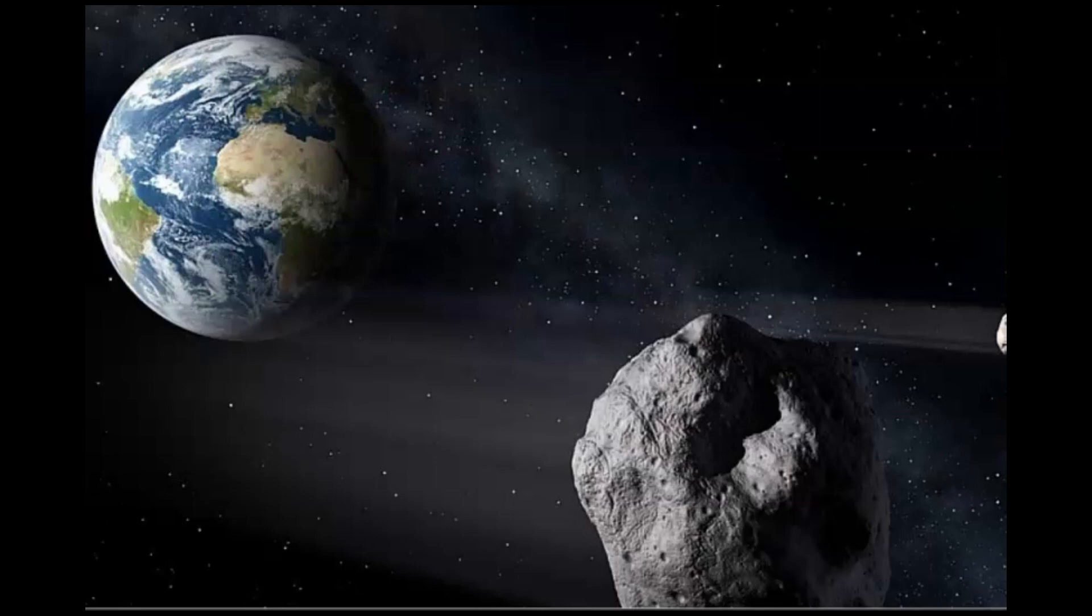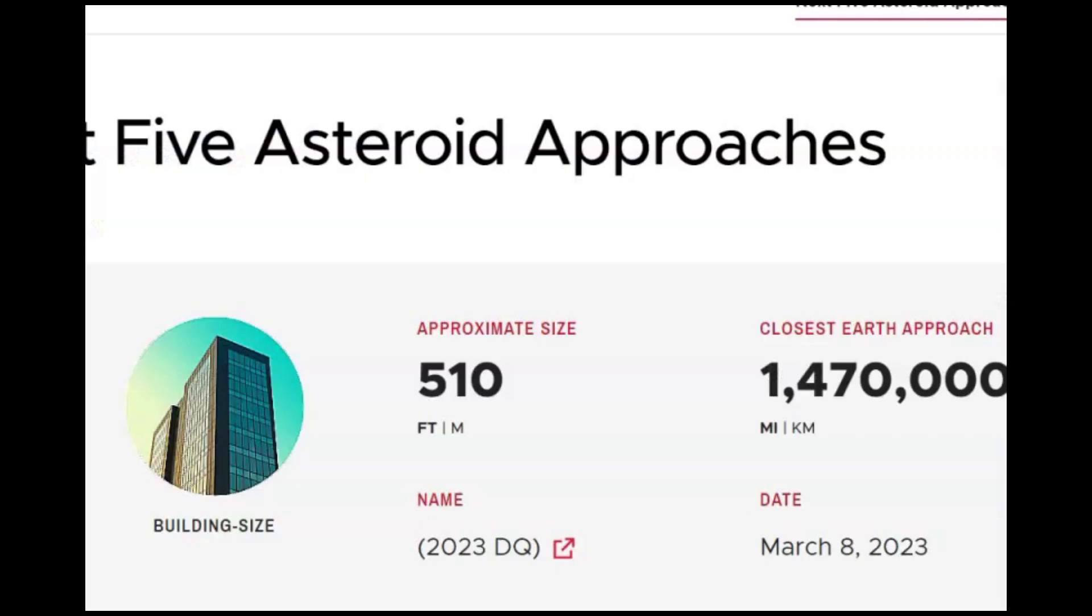NASA says it will pass Earth on Shushan Purim today. That comes from the book of Esther in the Bible when the king of Persia was conspiring to kill all the Jews. So it's supposed to pass during this holiday. And as far as I can calculate, that will be 6 p.m. tonight, March 8, 2023 Central Daylight Time.